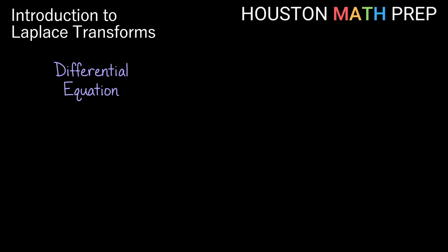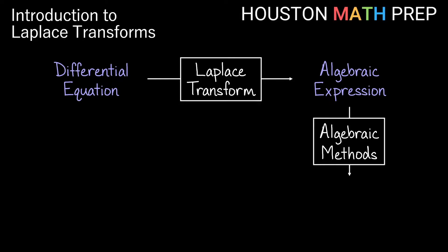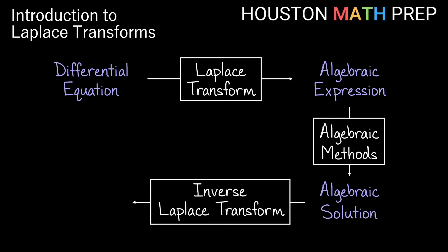We start with a differential equation, and what we'll do is compute the Laplace transform of that entire equation. That will give us some sort of an algebraic expression — an algebraic equation to be solved. We will solve the algebraic equation using whatever methods are appropriate, and then we'll take the inverse Laplace transform to convert it back into a solution for our differential equation.